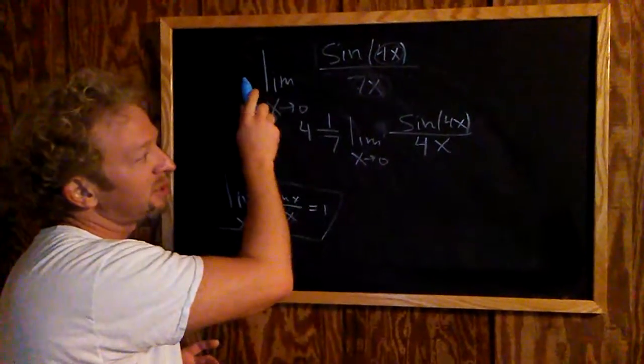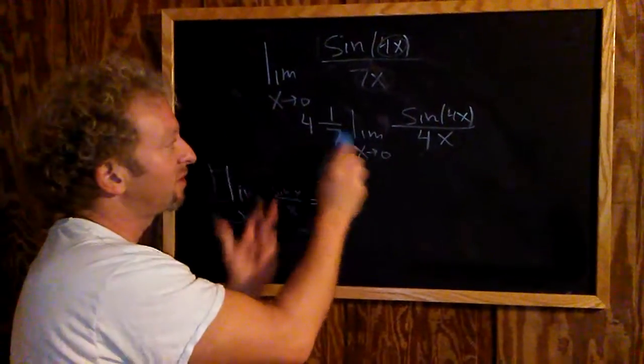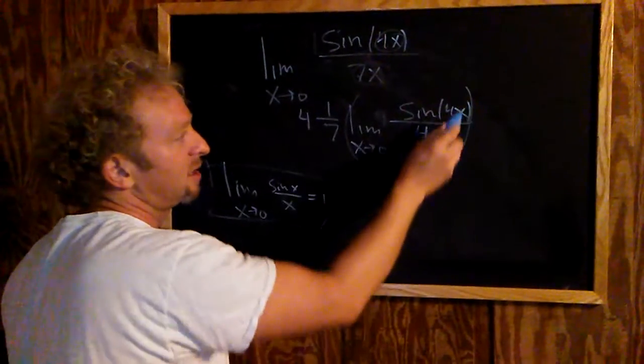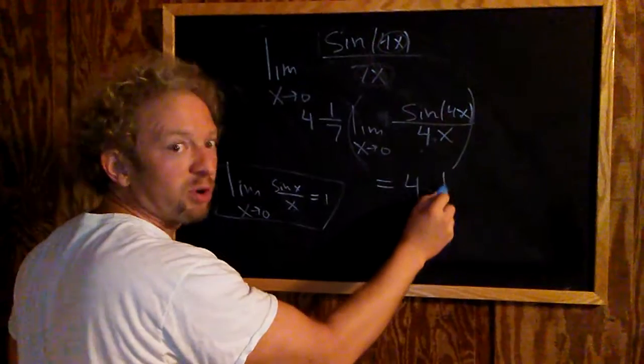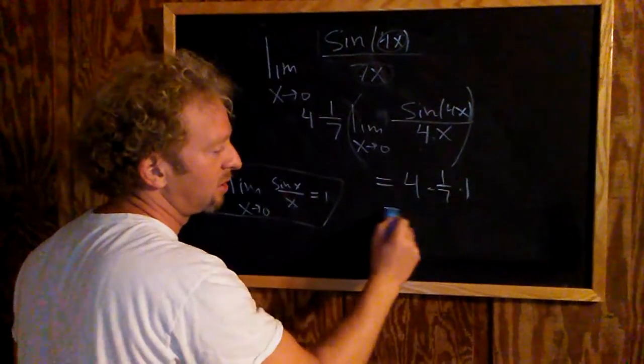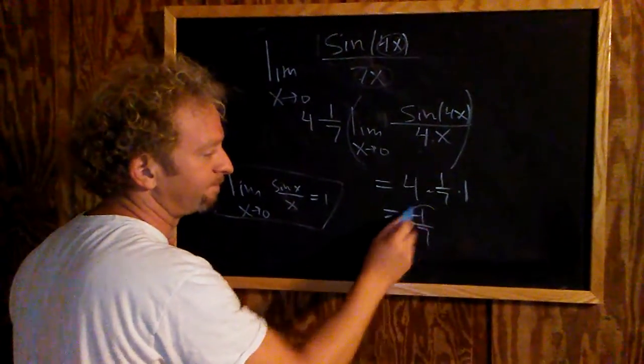We've done nothing. We pulled out the 1 over 7, and we put a 4 here and a 4 here so they cancel. Now this whole limit matches this, so this is equal to 1. This is 4 times 1 over 7 times 1, which is 4 over 7.